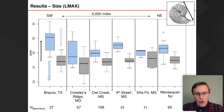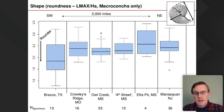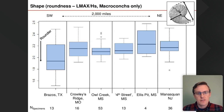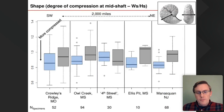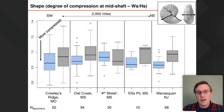The uncoiling index (Lmax over HP) shows some variation at each site but is remarkably static across the entire range of the species. Roundness — measurable only on macroconchs — is again pretty static; the large variance in Texas values for this parameter is potentially a preservational artifact. Whorl compression is an interesting trait, often considered quite plastic in ammonites with regard to environmental change — more compressed morphotypes are thought to occur in higher-energy environments. But all three compression ratios measured at different ontogenetic stages show the same overall pattern: some variation but pretty static overall.